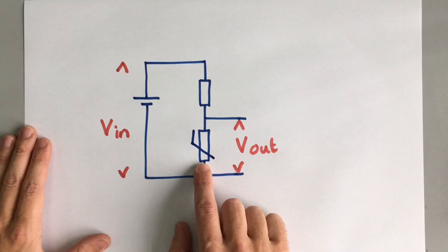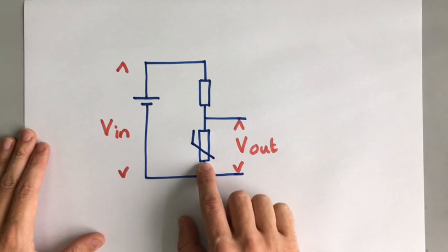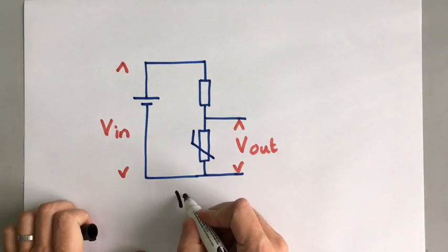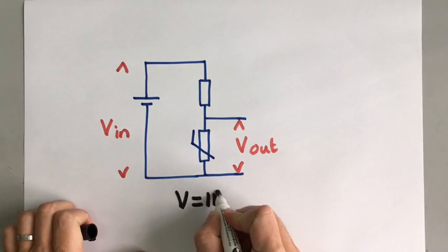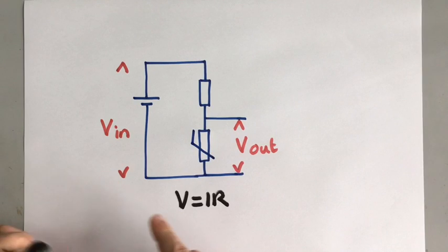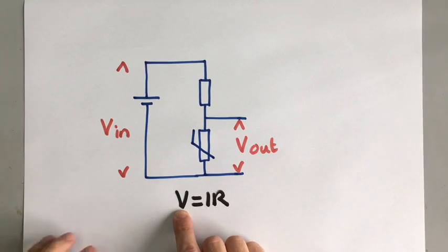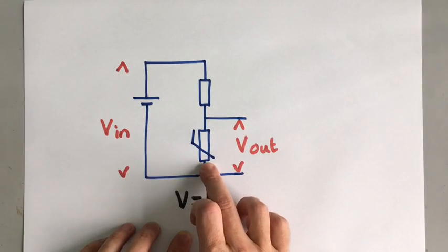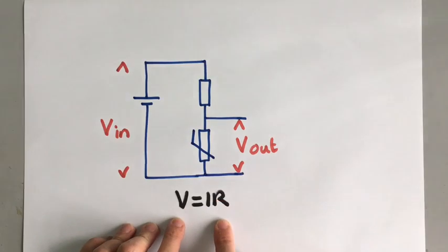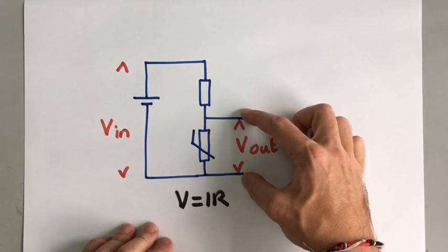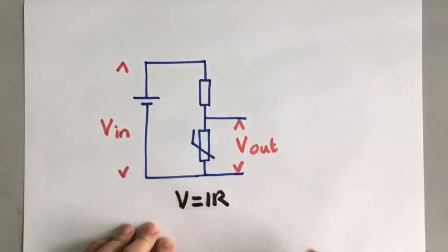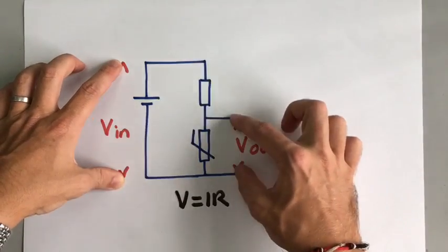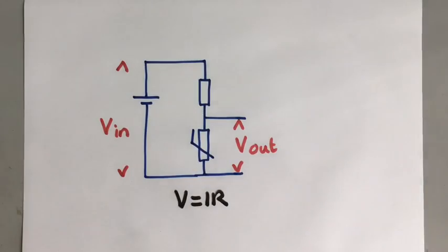So with your thermistor, as temperature increases, resistance decreases. If resistance decreases here, we know because we know we've got a constant current and V equals IR. If resistance decreases, then voltage decreases. So as the temperature goes up, the resistance goes down and the voltage goes down. So V out gets smaller. This type of circuit is called a potential divider because it's dividing the potential difference across the two resistors.